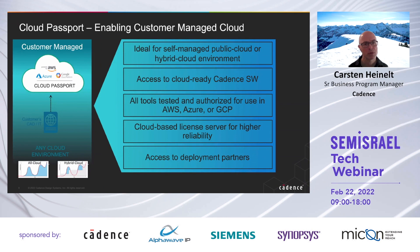Cloud Passport enables customer-managed clouds and Cadence tool usage in customer-managed clouds. It's ideal for self-managed public cloud or hybrid cloud environments, and it gives our customers access to cloud-ready Cadence software. All tools have been tested and authorized for use in Amazon Web Services, Microsoft Azure, and Google Cloud Platform. You will have a cloud-based license server for high reliability, and we can give you access to deployment partners to build such a cloud together with you.